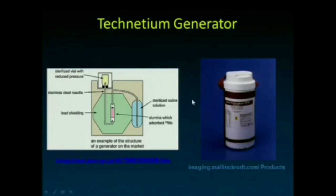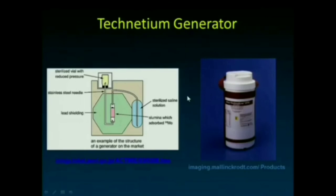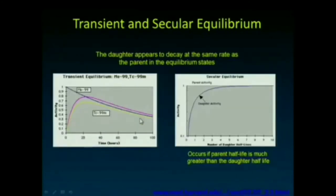Increasingly, doses are becoming available — especially in well-populated metropolitan areas — where technetium can be delivered on a per-dose basis. You tell them what time your study will occur, and they send the unit dose calibrated to decay to exactly what you need at that time. But some facilities still use their own generator each day.